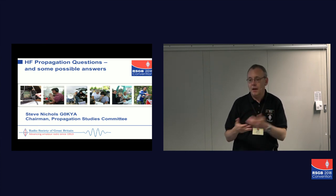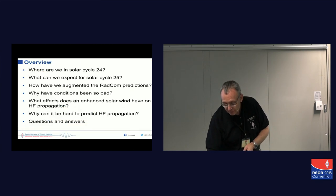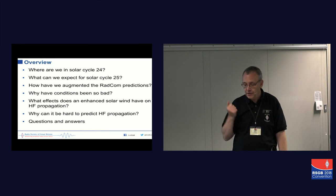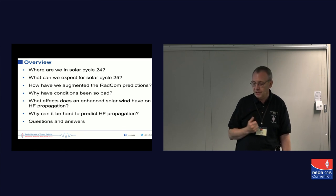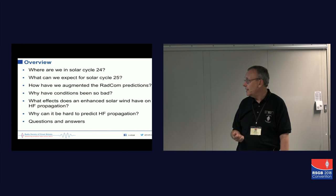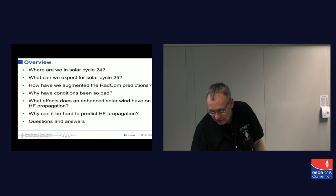But some of the questions that kept coming up, I thought it would be a good idea to perhaps use some of those in the presentation. And without further ado, we'll get on with it. And what we're going to look at today, just a few questions, we've only got half an hour or so. Where are we in solar cycle 24? What can we expect for solar cycle 25? What have we done recently to augment the RADCOM predictions that are printed every month? Why have conditions been so bad? What effect does the enhanced solar wind have on HF propagation? And why can it be so hard to predict it? And then we'll have some questions at the end. So if you've got any questions, probably the best thing to do is hold on to them until the end of the presentation.